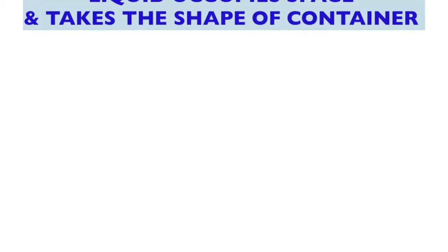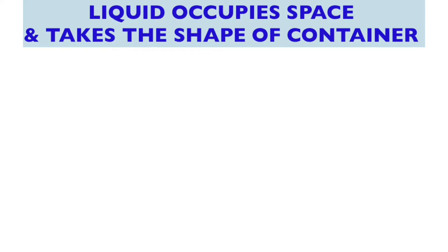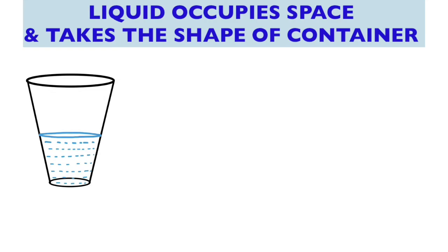Now we will see how liquid occupies space and takes the shape of the container in which it is kept. Here we have taken a glass of water. The water has occupied the space inside the glass and has taken exact shape of the glass.